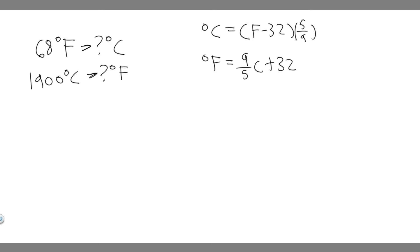So let's start with part A. For A, we're converting Fahrenheit to Celsius, so we're going to use the first formula. It's just going to be equal to the Fahrenheit value, which is 68, minus 32, and then multiply by 5 over 9.